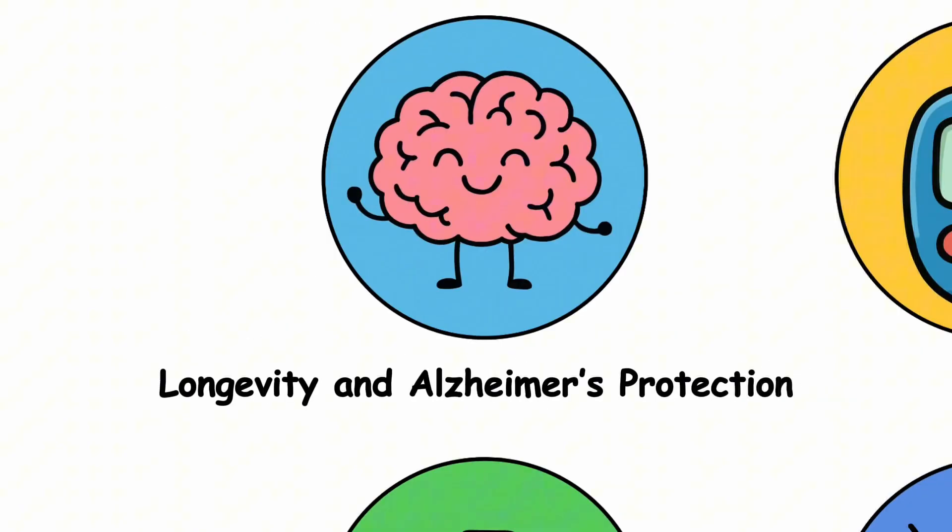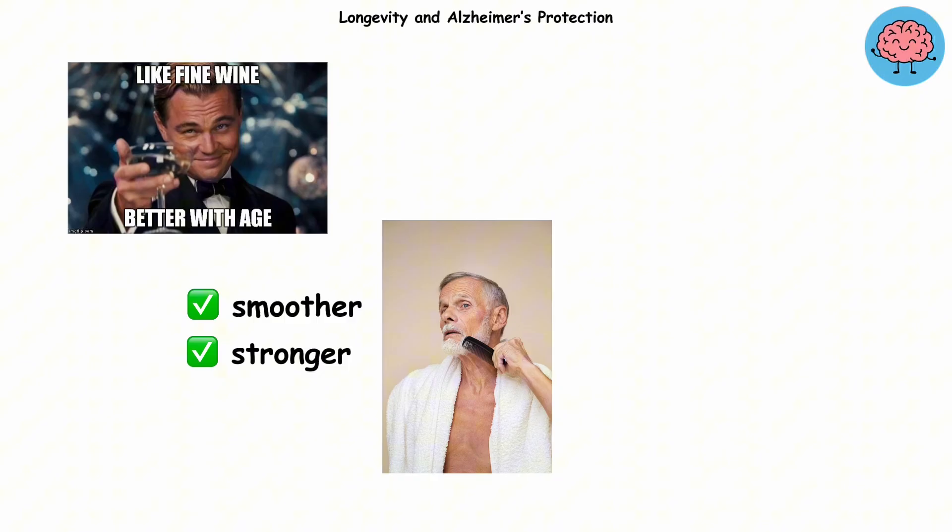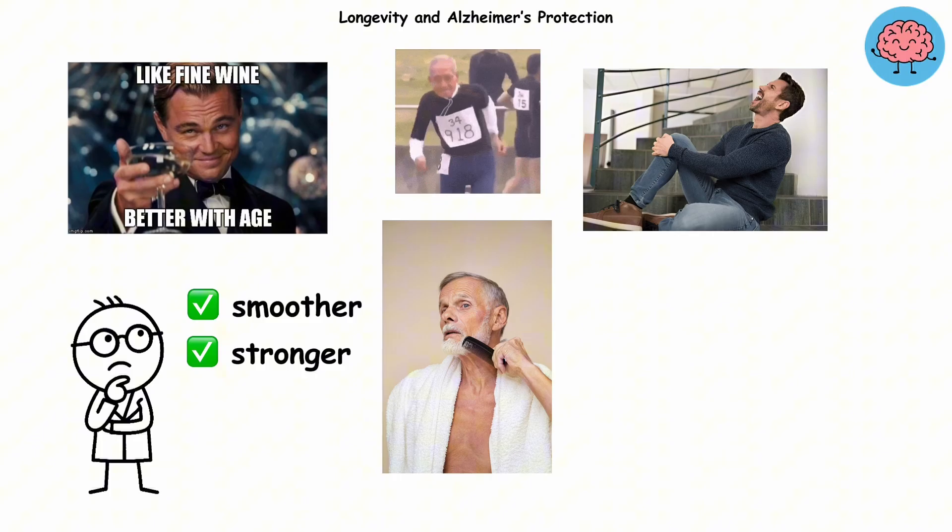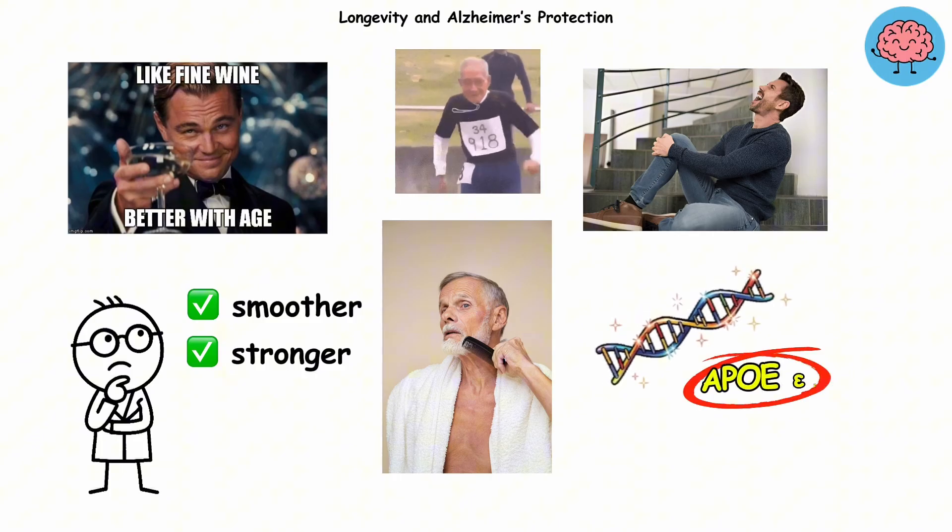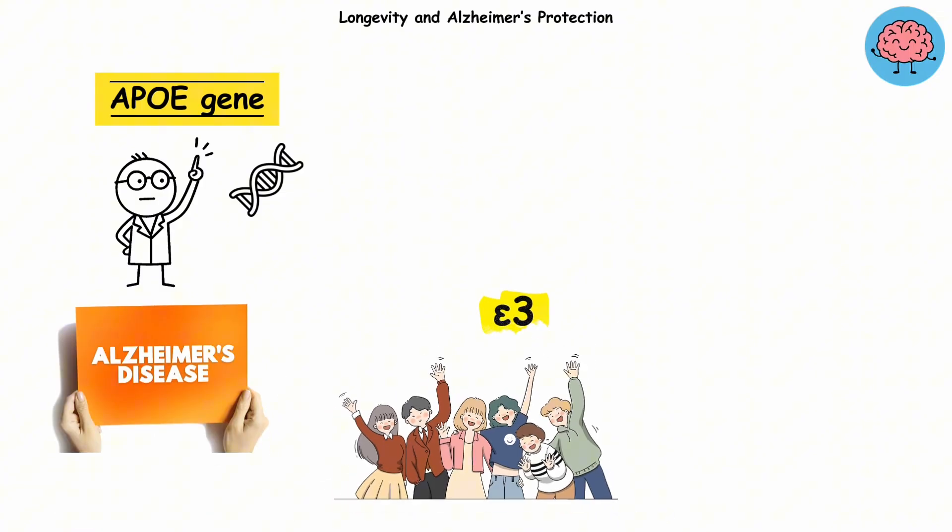Longevity and Alzheimer's Protection. Some people seem to age like fine wine - smoother, stronger, and somehow still jogging at 70 while you're winded just looking at stairs. Part of that secret? A tiny genetic glitch called APOE epsilon 2. You might have heard of the apolipoprotein E gene, and it's tied to Alzheimer's risk. Most people have the epsilon 3 version. That's the default factory mode.